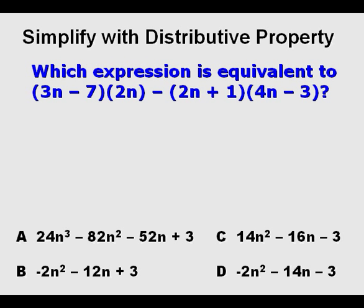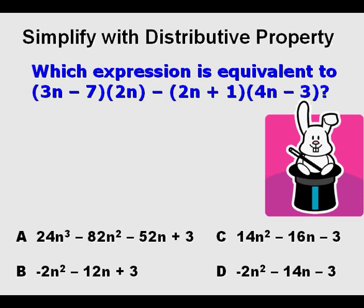Next problem, which expression is equivalent to quantity 3n minus 7 times 2n minus quantity 2n plus 1 times quantity 4n minus 3. Now this expression has quite a few operations needed to solve. So what we're going to do is start out solving this as a test taking trick method.